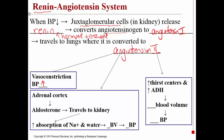Angiotensin 2 has a number of effects on different parts of the body, but its main overall effect is to increase blood pressure. First, it causes vasoconstriction of the smooth muscle of blood vessels — the lumen gets smaller and blood pressure increases. It also travels to the adrenal cortex and causes it to release the hormone aldosterone. Aldosterone travels back to the kidney and increases the absorption of sodium and water, so blood volume increases, and if blood volume goes up, so does blood pressure. Angiotensin 2 also travels to the thirst centers in the brain and causes you to drink more water, further increasing blood volume and blood pressure. It can also increase the amount of antidiuretic hormone, which decreases the amount of water released in urine, keeping more water in the blood.